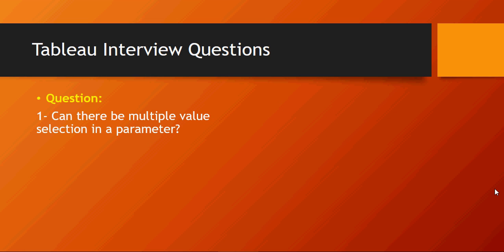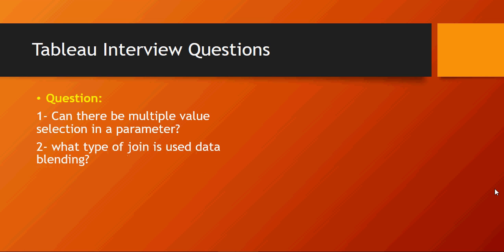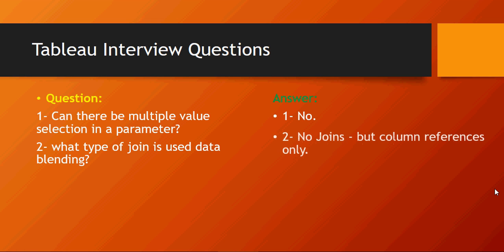Can there be multiple value selection in a parameter, and what type of join is used for data blending? The answer is no — there cannot be multiple value selection in a parameter. And no joins are created in data blending; it uses column references.